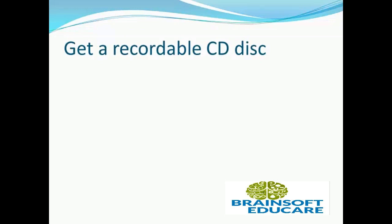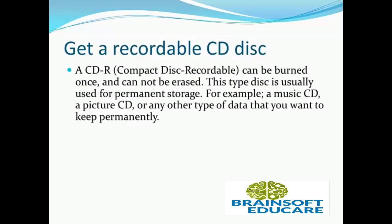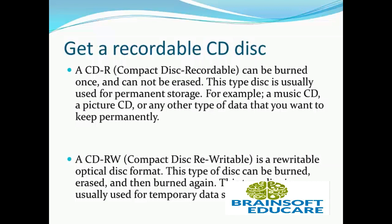Get a recordable CD disc. A CD-R, Compact Disc Recordable, can be burned once and cannot be erased. This type of disc is usually used for permanent storage — for example, a music CD, a picture CD, or any other data you want to keep permanently. CD-RW, Compact Disc Rewritable, is a rewritable optical disc format that can be burned, erased, and then burned again. This type is usually used for temporary data storage.